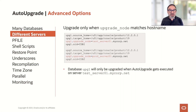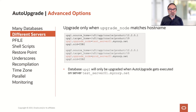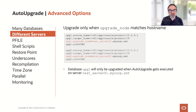But please be careful when specifying the upgrade_node. Normally, you would say localhost or just don't use the parameter — it's not needed. Then you avoid a pitfall here if you run auto-upgrade locally and have an upgrade config file for each server separately.